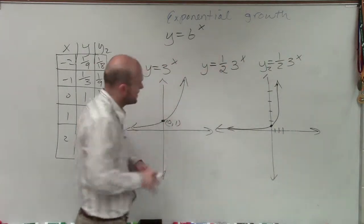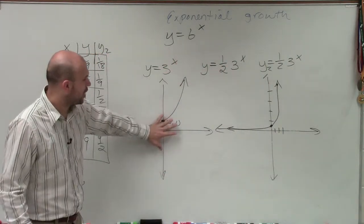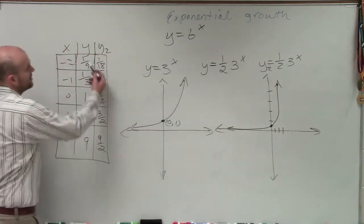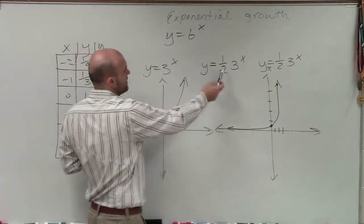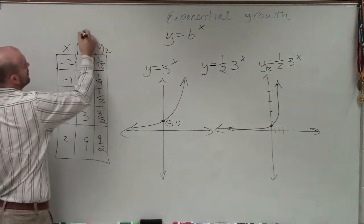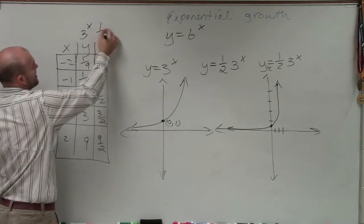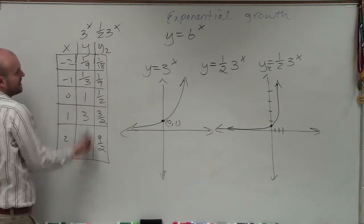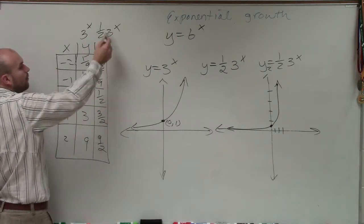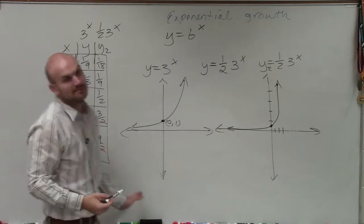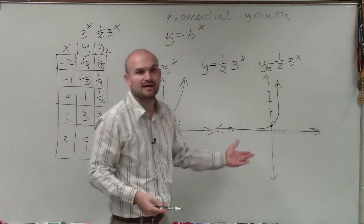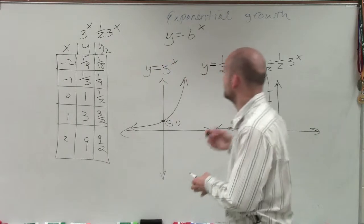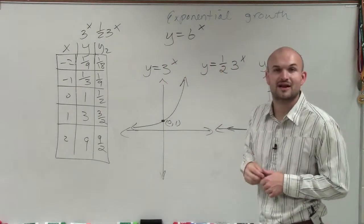We don't always have to create our parent graph when applying this, but what I like to do when multiplying by another factor is determine what 3 to the x is, and then do one half times 3 to the x. I plugged in my table for 3 to the x and then applied it for one half times 3 to the x to find my remaining values. That's how you graph an exponential with your a as a fraction. Thanks.